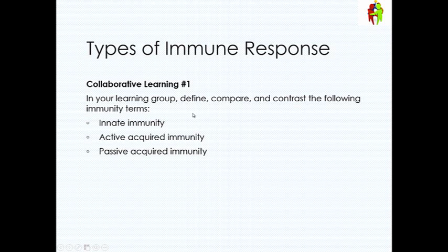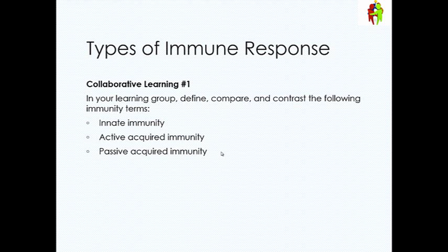We're going to review the terms of innate immunity, active acquired immunity, and passive acquired immunity. Innate immunity is what your body already possesses as a barrier to infection — like your skin, your mucous membranes, your tears.